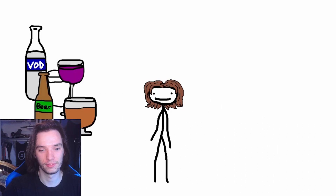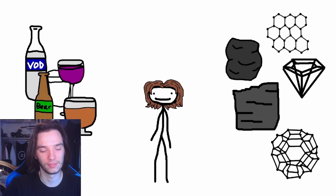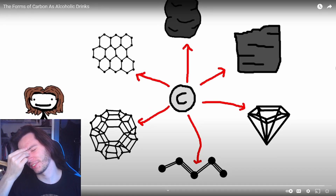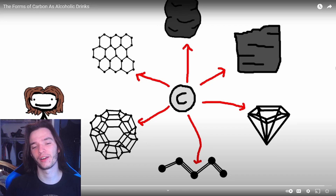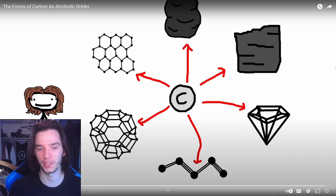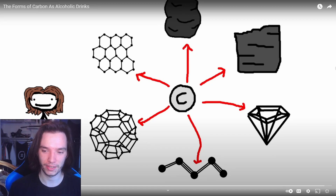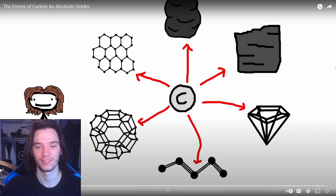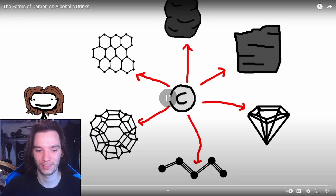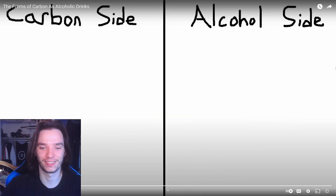Sam: 'Hey kids, today I'll be discussing the alcoholic equivalents of the various allotropes of carbon.' I love you Sam, but I have a very strong feeling you don't know what the word 'allotropes' means — and I'm saying that because I have no clue what it means. Never mind — an allotrope is just the various forms that carbon atoms can arrange themselves in. Okay, he does know.